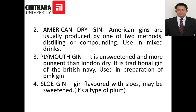The second type is American Dry Gin, usually produced by either the head mix or cold mix method. Plymouth Gin is unsweetened and more pungent than London Dry Gin — it is the traditional gin of the British Navy and is used in the preparation of pink gin, which is a very famous cocktail.